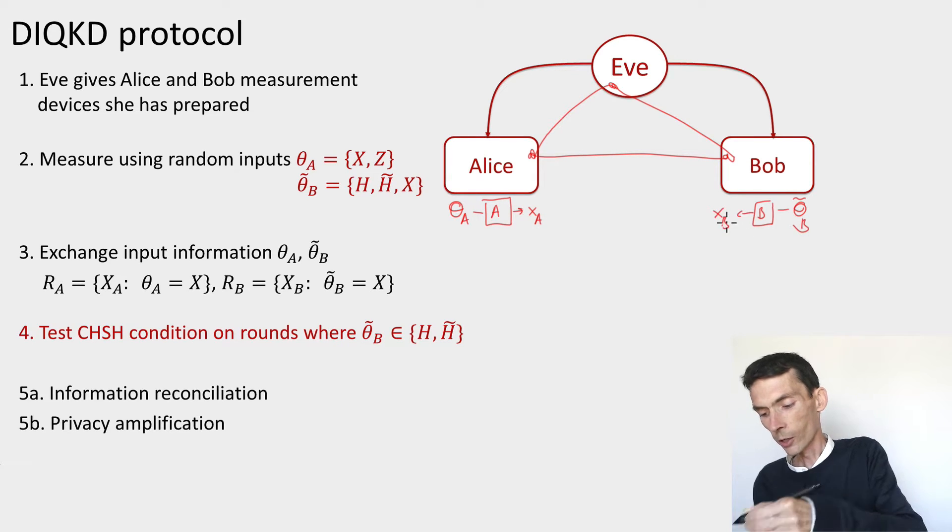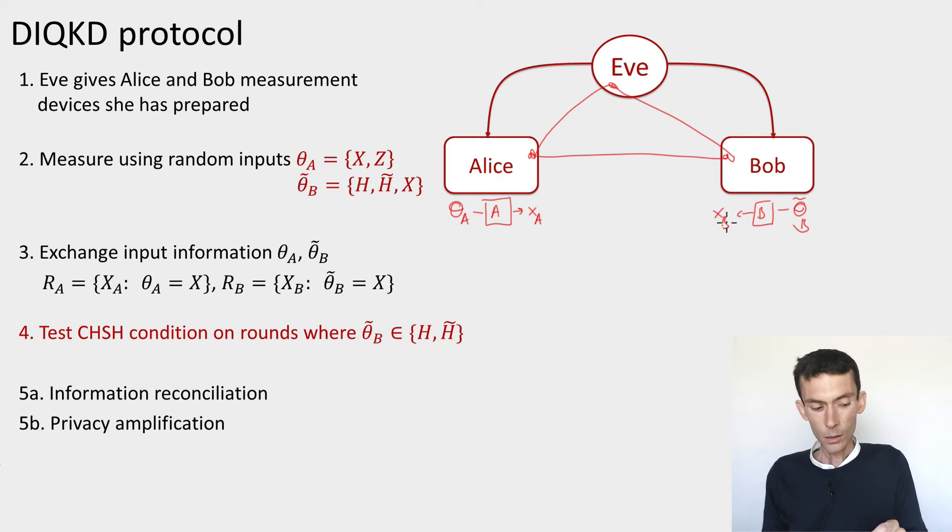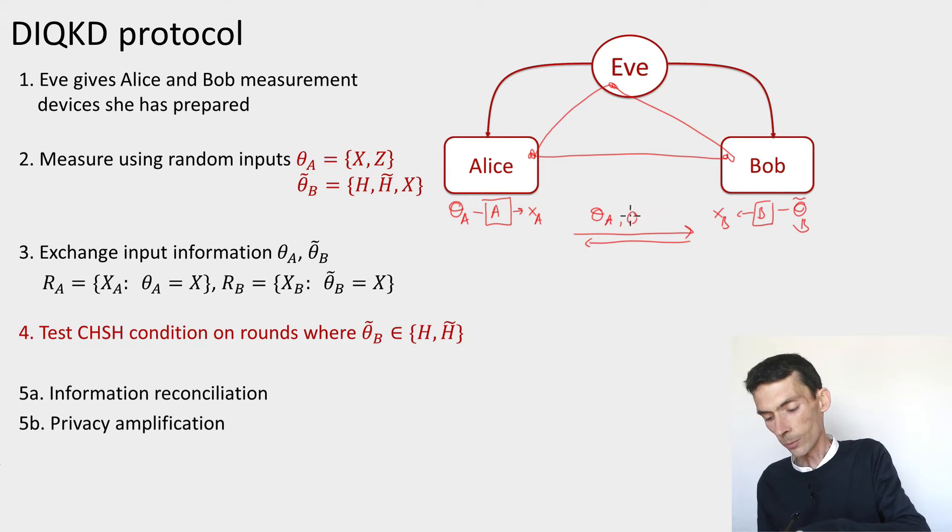They record their outputs, and that's the end of the first phase of the protocol. In the next phase, they exchange their basis information, theta_a and theta_tilde_b, and they split the rounds into two sets. Half of the rounds will be used for testing, half of the rounds they'll use later for the raw key.